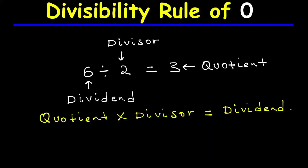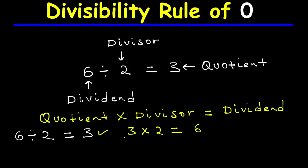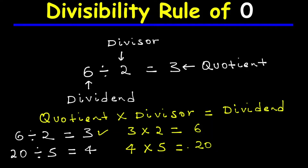For example, six divided by two is equal to three. To check, we multiply the quotient three by the divisor two, which equals six — and six is the dividend, so our division is correct. Another example: 20 divided by five is equal to four. We multiply the quotient four by the divisor five, which equals 20 — and 20 is the dividend, so our division is correct.